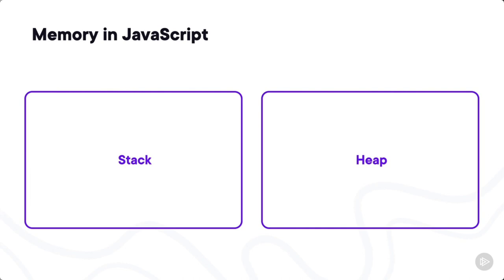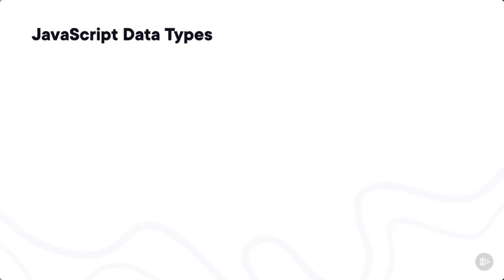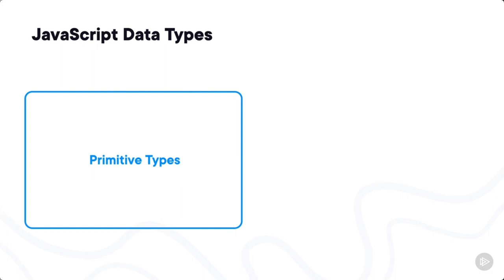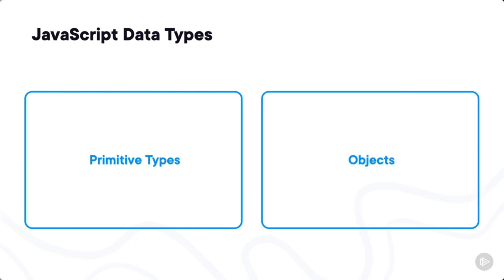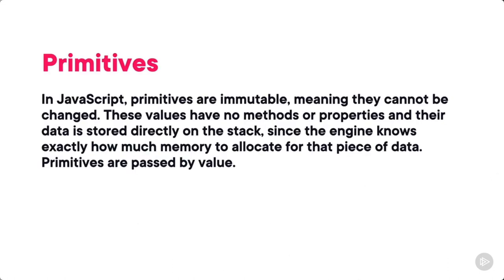There are two overall types of JavaScript data types. First, we have primitive types, which I'll explain shortly. Everything else in JavaScript is an object. Primitives in JavaScript are immutable — they cannot be changed — they have no methods or properties, and their data is stored directly on the stack since the engine knows exactly how much memory to allocate. Primitives are passed by value. You might say that immutability means a variable has to stay the same value, but that's not what I mean — if I assign a new string to a variable, that's fine, but it creates a different piece of memory allocated for that new string.